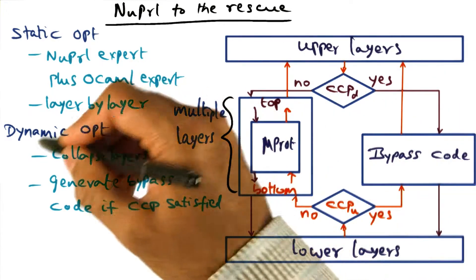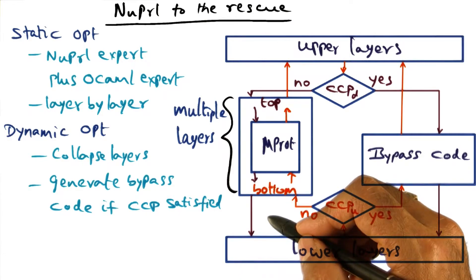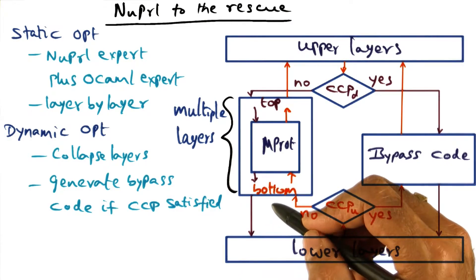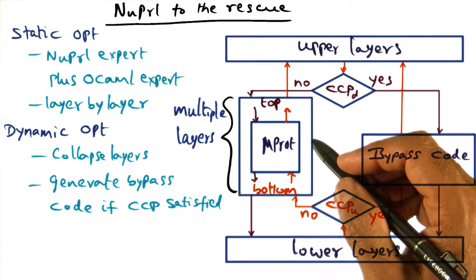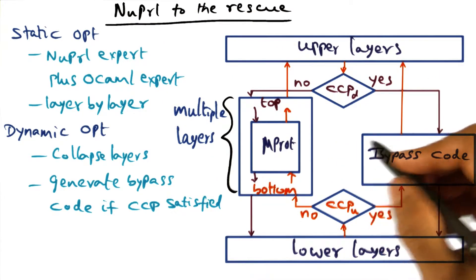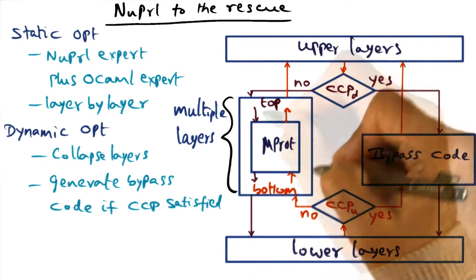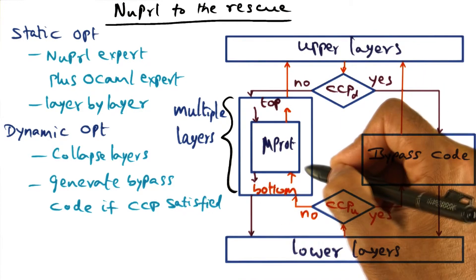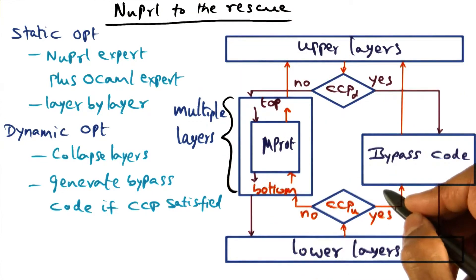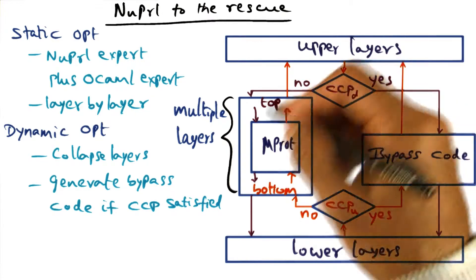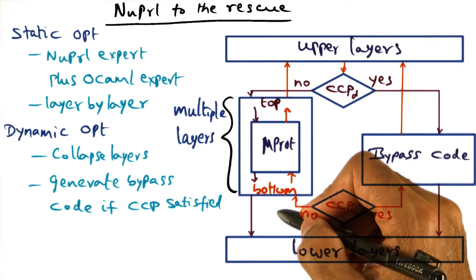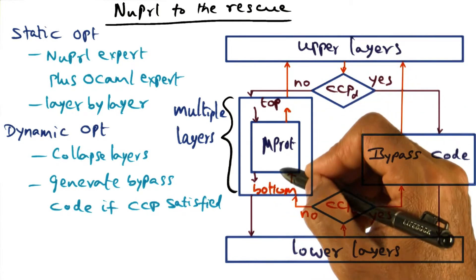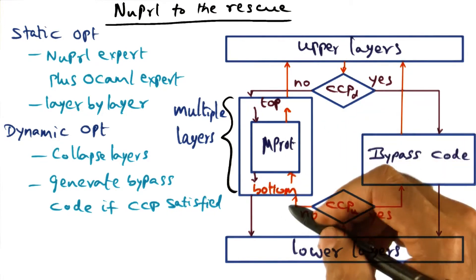That's the beauty of the dynamic optimization. It's completely automated and it comes from the power of the theorem proving framework of NuPRL. The optimization theorems in the NuPRL framework prove the equivalence of the bypass code to the layers of protocol that it is replacing. In the theoretical world of the theorem proving framework, we can actually prove through optimization theorems that the bypass code does exactly the same job as all of these multiple layers of micro protocols that would have processed this message.